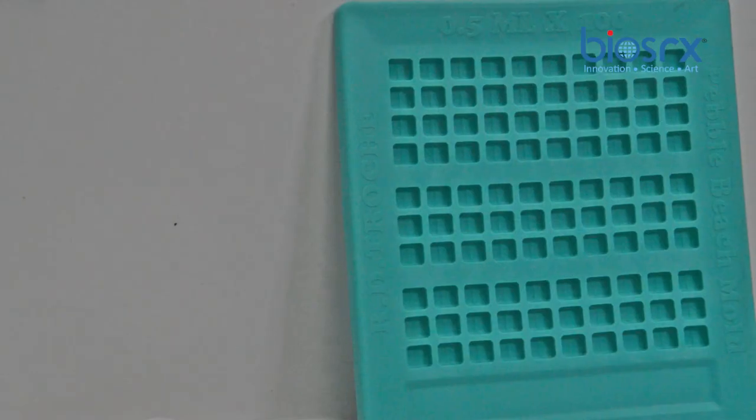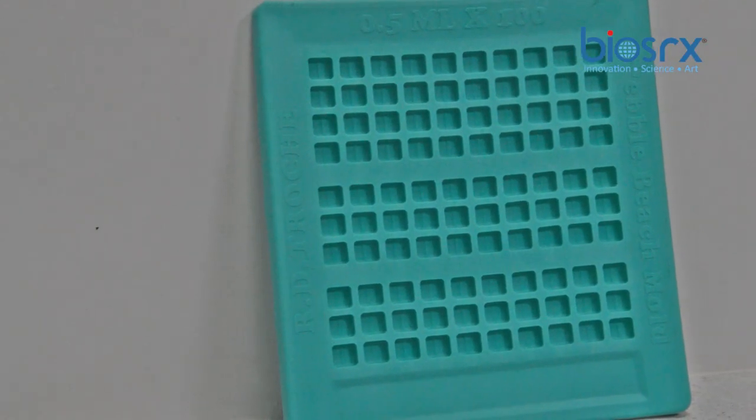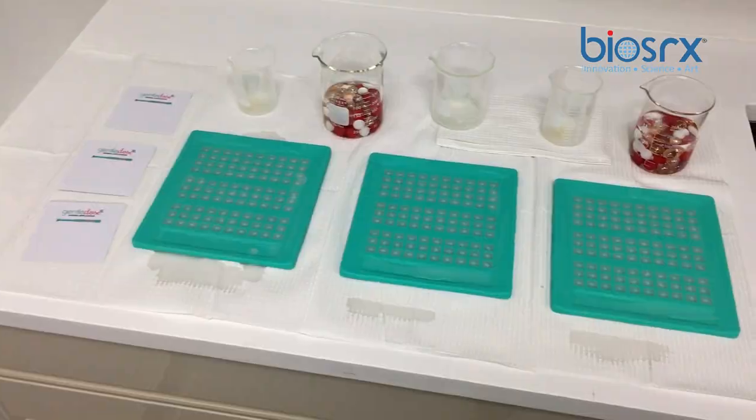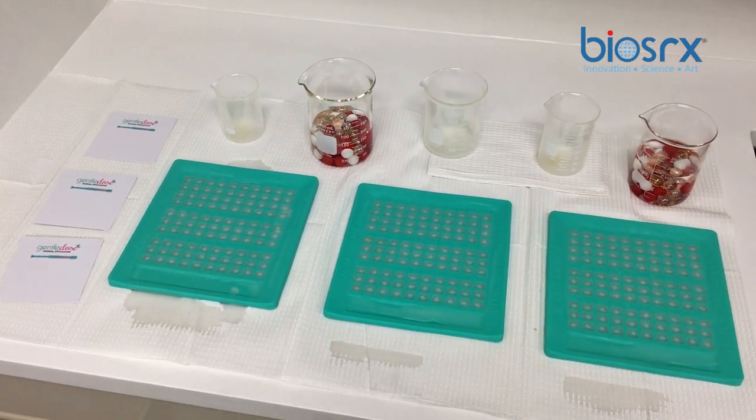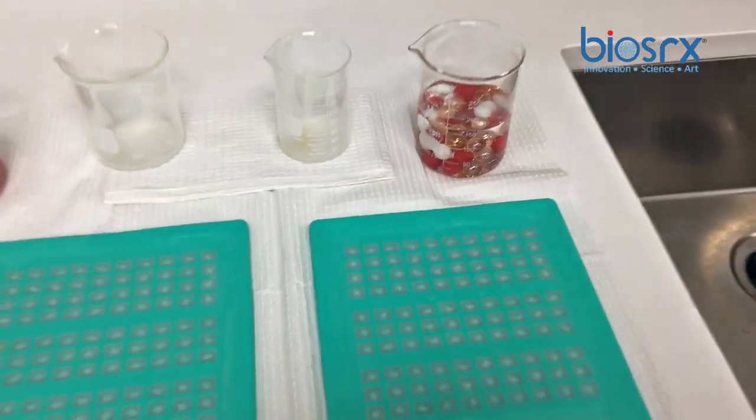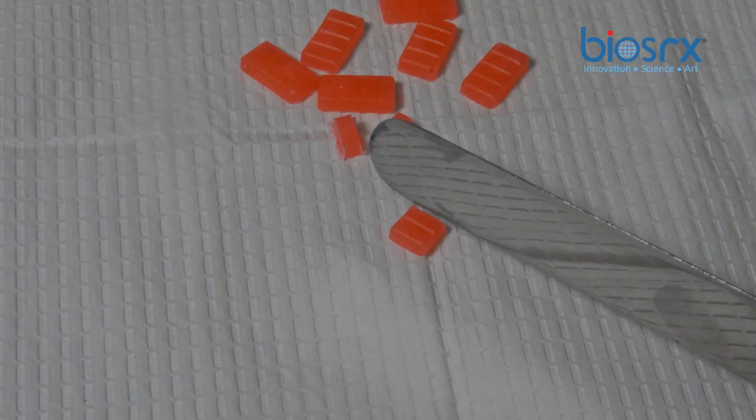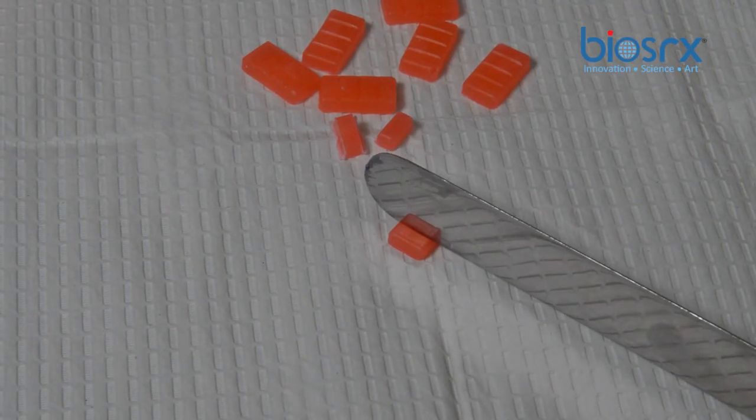RD trochee molds come in two cavity sizes. The half-milliliter mold can hold approximately 120 milligrams of active pharmaceutical ingredients, such as sildenafil, tadalafil, and testosterone. These molds are single-scored that allow the trochees to be cut in half.